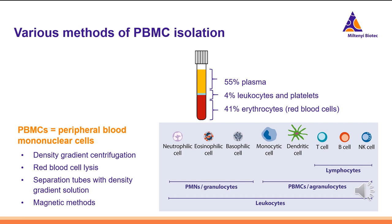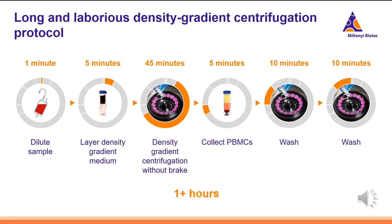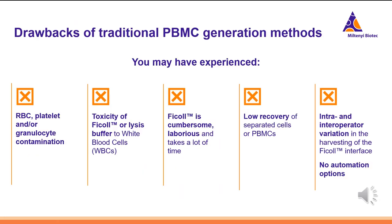We don't want to go into detail on all methods today, but density gradient centrifugation is surely the most common method. Some people only lyse the red blood cells. There are various kinds of separation tubes with density gradient solution, as well as some magnetic methods you might be familiar with. All of these different methods come with their own pros and cons. To give you a quick overview on the density gradient method: the protocol is long and laborious, with many individual steps you have to perform manually. You have to carefully layer the density gradient media and blood, and not using the brake on the centrifuge can bring processing time up to an hour or even longer. You yourself may have experienced the drawbacks: red blood cell, platelet, and granulocyte contamination, and the toxicity of Ficoll or lysis buffer to your cells.